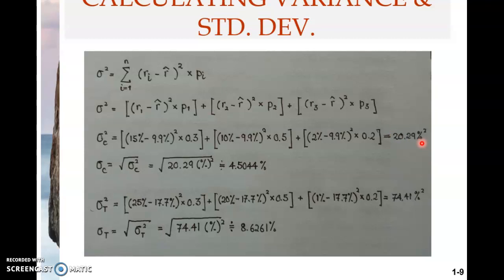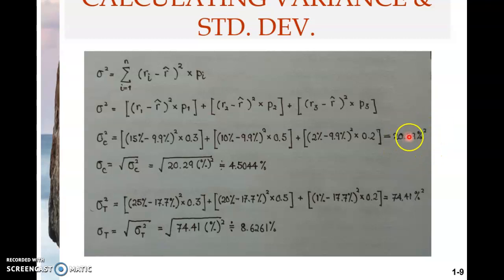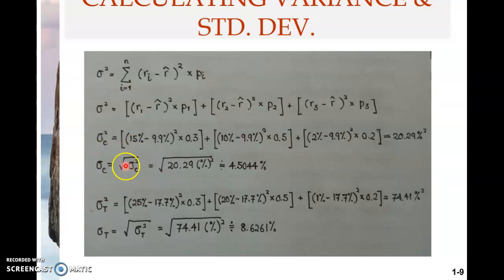The result is percentage squared because you started with percentage values — 15% minus 9.9% is in percent — and when you square that it becomes percent squared, which is 1 over 10,000. So 20.29 percent squared can be written as 20.29 over 10,000. Now you compute the standard deviation, which is simply the square root of the variance. The square root of 20.29 percent squared gives approximately 4%.